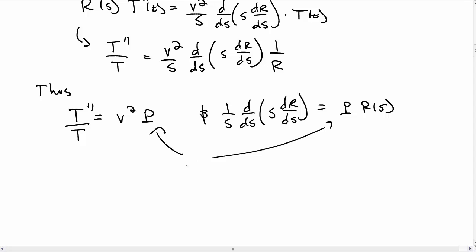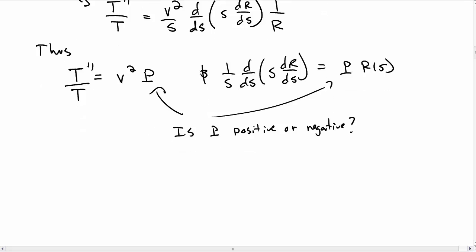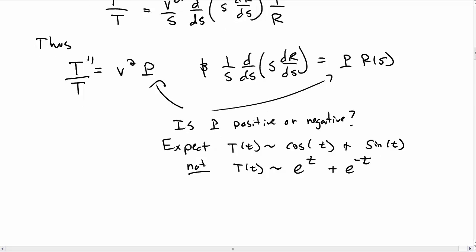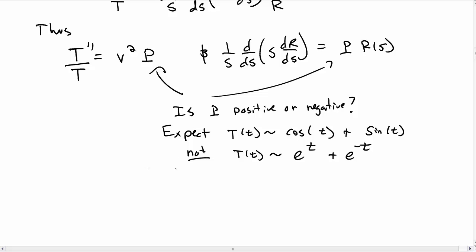Usually at this point we have to figure out whether we want to choose p being positive or p to be negative. We can guess our way to that answer by thinking about what happens for t of t. We expect it to go like cosine of t or sine of t because it's a vibrating membrane. We don't expect it to be exponential like e to the t or e to the minus t.